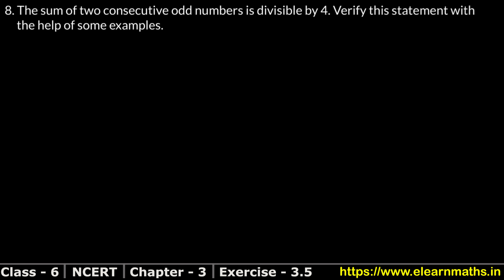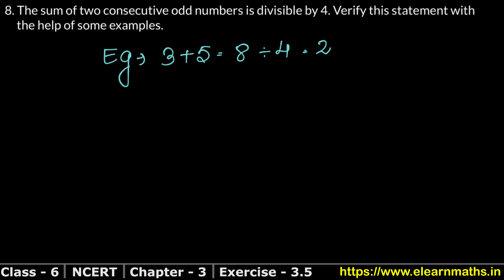Let's take an example. 3 and 5 are both odd numbers and are consecutive odd numbers. Their sum is 3 + 5 = 8. And 8 is divisible by 4.